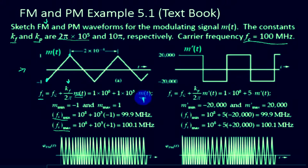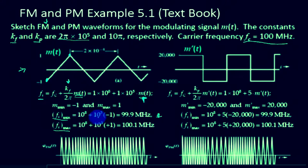We can simply plug in the values of M of t. For the minimum, we plug in minus 1, giving 10 to the power of 8 plus 10 to the power of 5 times minus 1, which is approximately 99.9 megahertz — that is, we subtract 0.1 megahertz from the 100 megahertz carrier. For the maximum, Fi max, we add 10 to the power of 5 and get 100.1 megahertz.